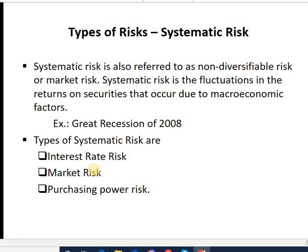Systematic risk is also referred to as non-diversifiable risk or market risk. No company can control systematic risk because it affects all companies and all industries together. It is the fluctuation in returns of securities that occurs due to macroeconomic factors — factors which affect the entire economy on a large scale. All industries are on equal footing; they all have to face this systematic risk.